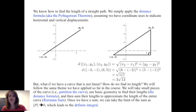But how do we proceed if the curve is not linear? How do we find its length? We are going to follow the same theme applied so far in this course: take small pieces of the curve — partition the curve — use basic geometry to find their lengths, i.e., the distance formula, and sum those lengths to approximate the total length using a Riemann sum. Once we have the sum, we take the limit as the norm of the partition goes to zero, which leads to the definite integral.